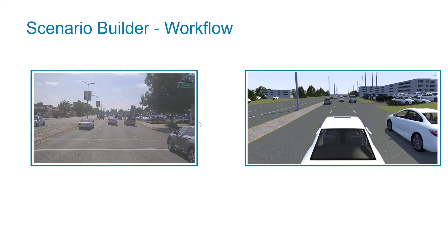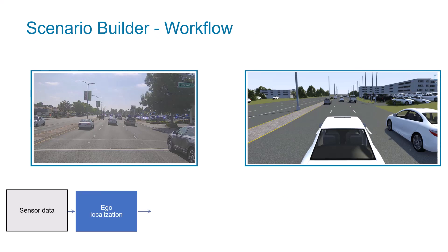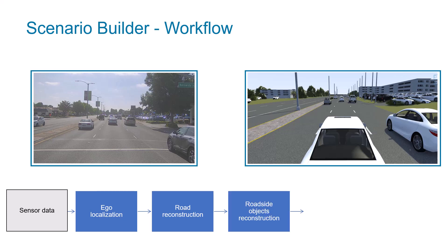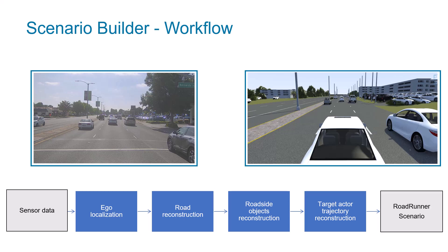The workflow involves the following steps: first, capturing precise sensor data from an actual driving scenario; followed by ego actor localization to accurately extract vehicle trajectories; then extracting roads with lanes and reconstructing roadside objects; and reconstructing non-ego actors and their trajectories. These steps culminate in a virtual scenario that mirrors the real-world scenario.